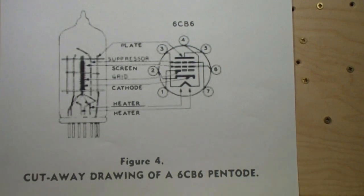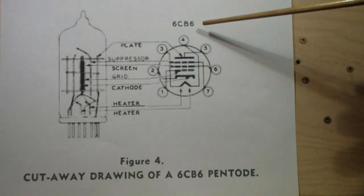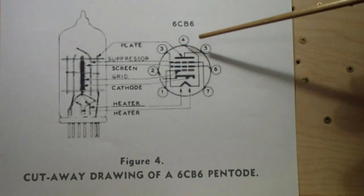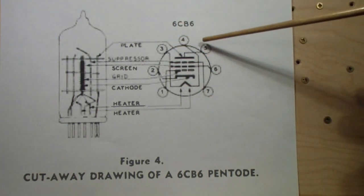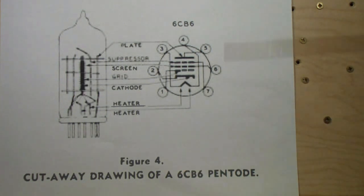Here is a cutaway of what I would call a modern pentode. This is the 6CB6. It was used a lot in IF amplifiers and even in some RF amplifiers of radios and television sets. Once again, it has five active elements, plus a heater, and it provided a superior tube. Not only was it less likely to oscillate, but also it provided more gain, more amplification, and also a higher plate resistance.